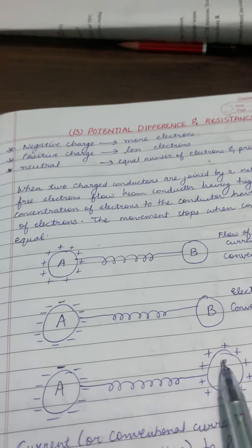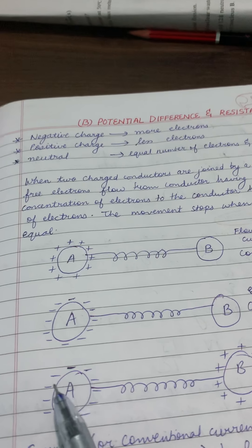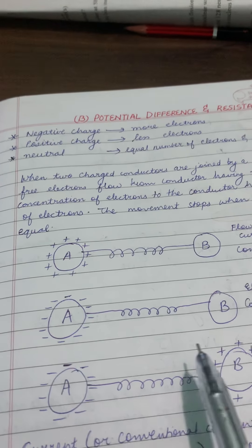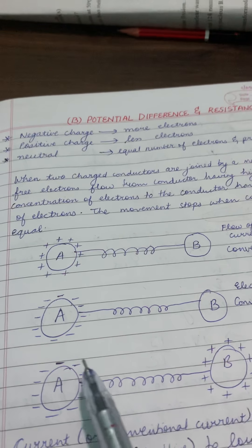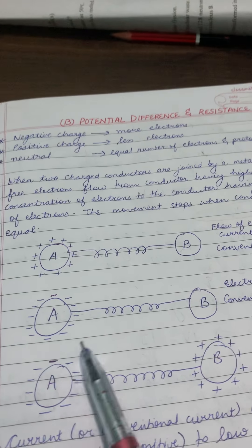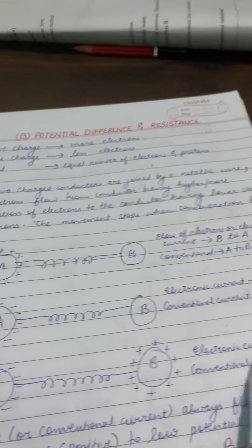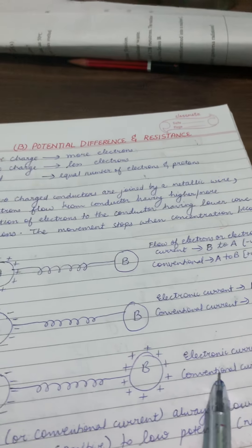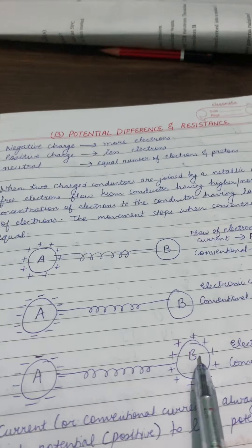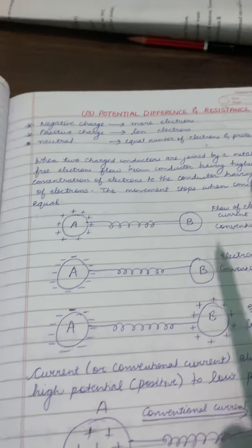Next case: one conductor is negative and one is positive. Negative means more electrons, positive means fewer electrons. So electronic current flows from A to B, and conventional current flows from positive to negative — that is, from B to A.